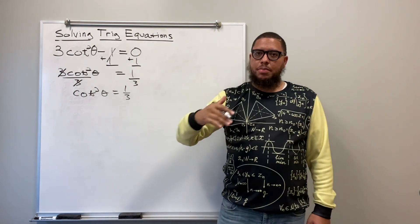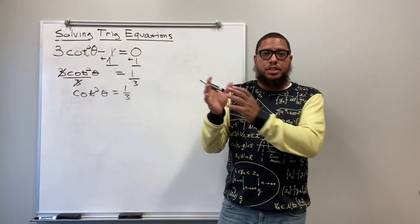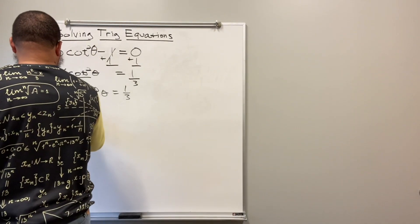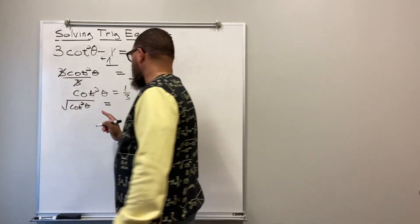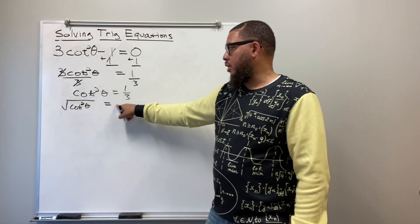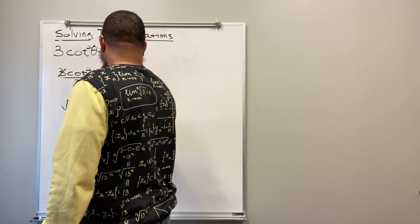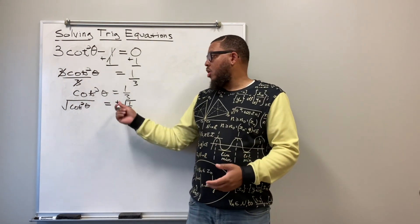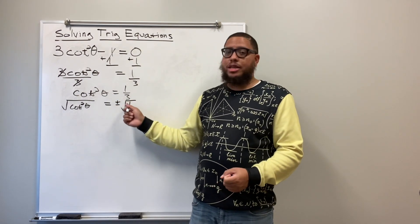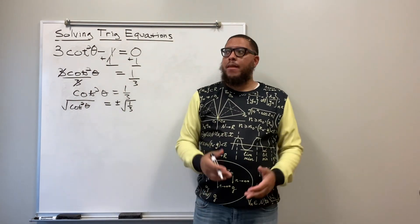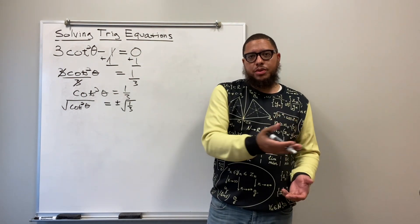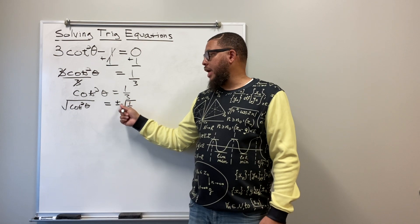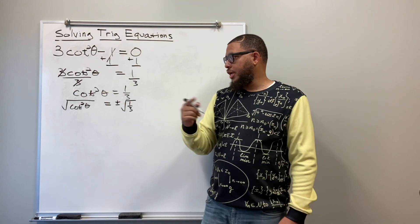Now I want to get rid of the exponent — one step at a time. The inverse of squaring is taking the square root, so I take the square root of both sides. I get the square root of cotangent squared of theta. Important: put a plus or minus sign after the equal sign before the square root of one third. We include plus or minus because both positive and negative roots are valid — the square root of nine is both three and negative three.